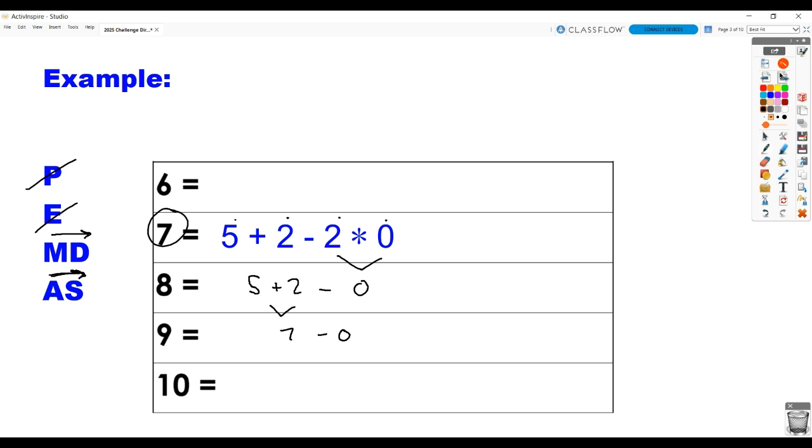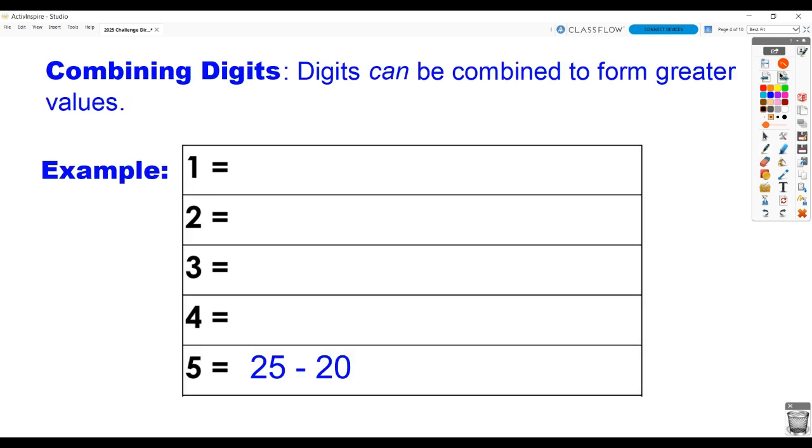There are many possibilities on how to get each one of these numbers. Another way that you might be able to form the numbers is by combining digits together. Notice we solved 5 before. Here's a new way we can make 5 using the digits in 20, 25, right? I used all four of them, but I combined the 2 and the 5 to make 25. I combined the other 2 and the 0 to make 20. Well, what do we get when we take 20 away from 25? We get 5.